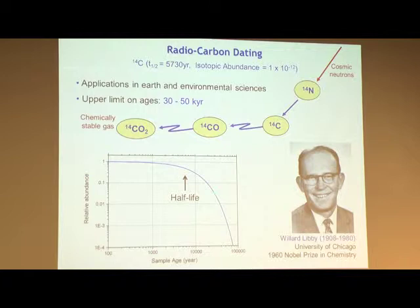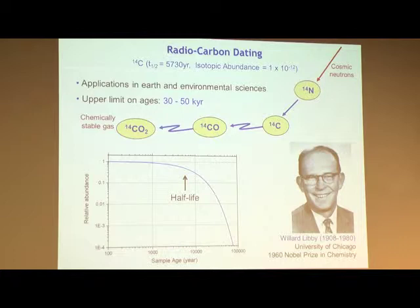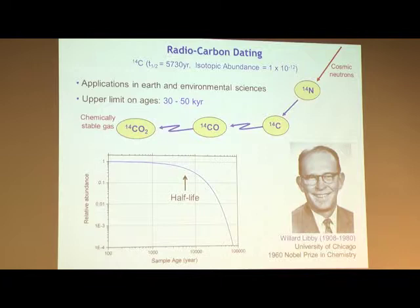When the exchange with the air stops, that's when the radiocarbon dating clock starts ticking. The carbon-14 abundance goes down by a factor of two every 5,730 years. So by measuring the carbon-14 isotope ratio in a sample, you can tell the so-called radiocarbon age. This was a Chicago idea, first proposed by Willard Libby towards the end of the 1940s, and he received the Nobel Prize for this work.